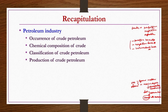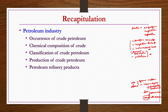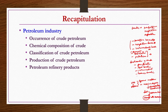Then we discussed production of petroleum — exploration methods to find reserves and production methods to extract crude petroleum. We also discussed petroleum refinery products: when you do fractionation of crude petroleum, you get several products — gas fraction, light fractions, intermediate fractions, heavy fractions, and residues. Under each category, we noted the major products available.